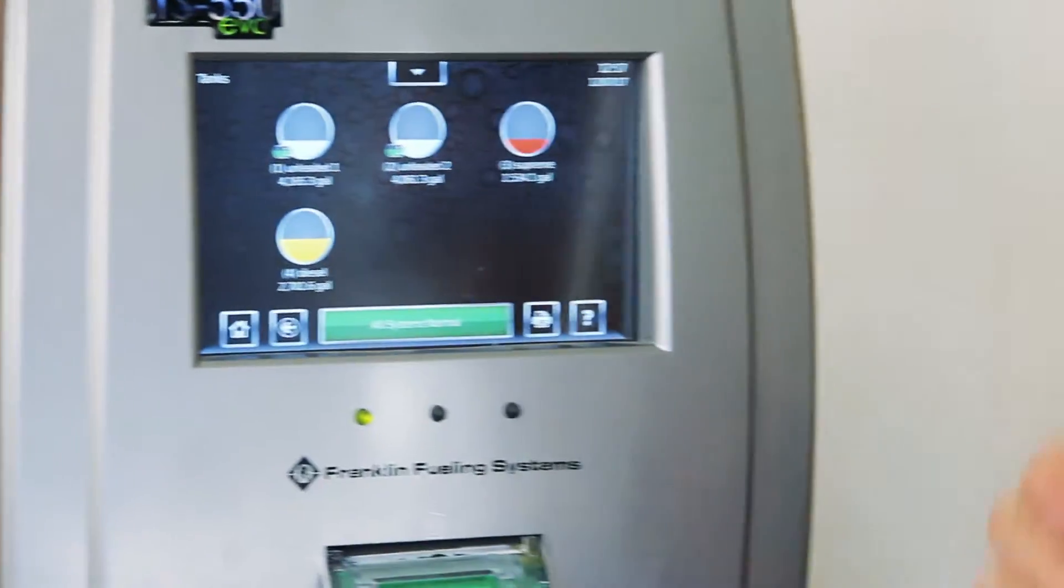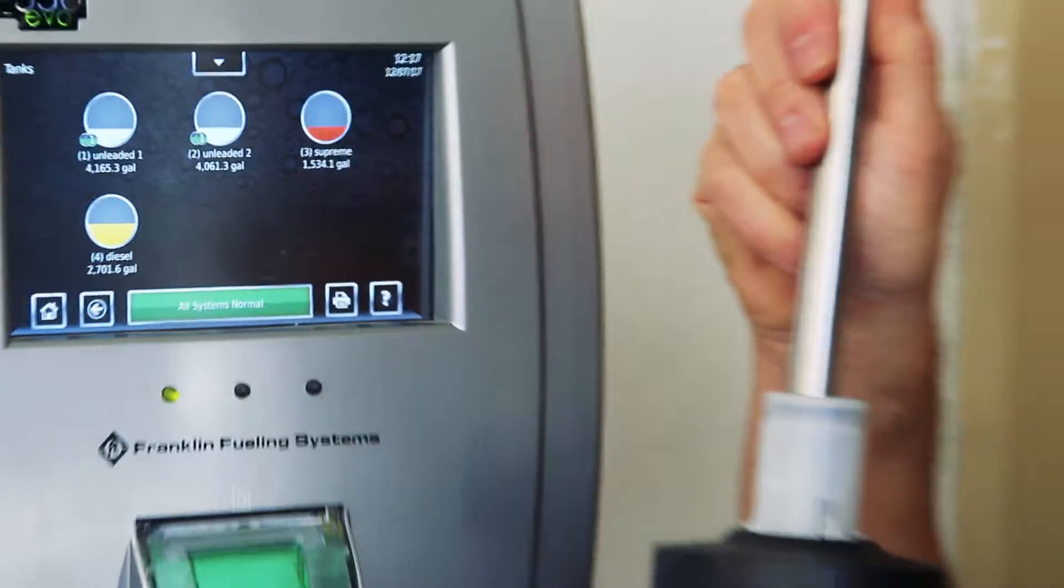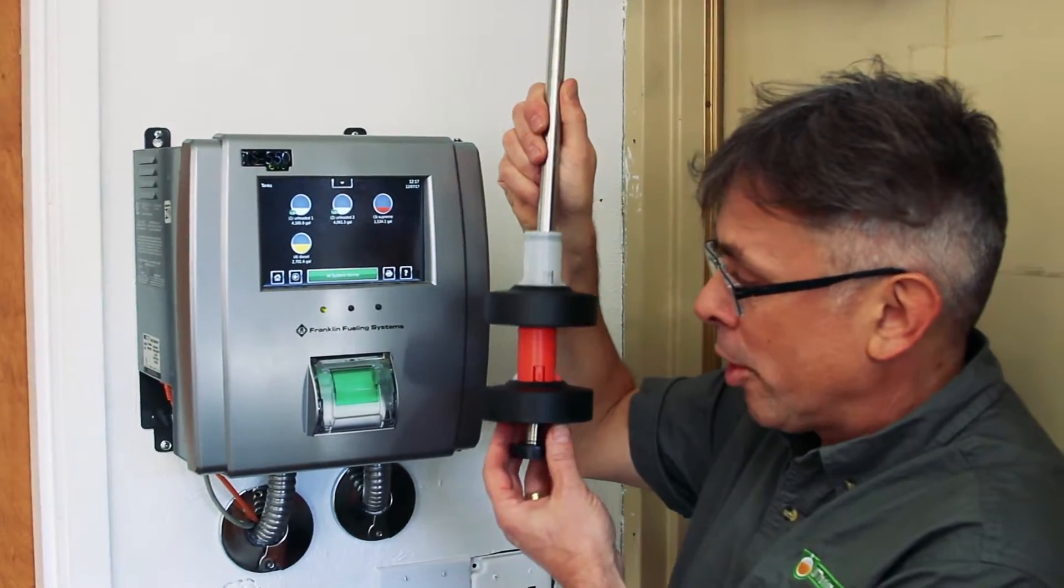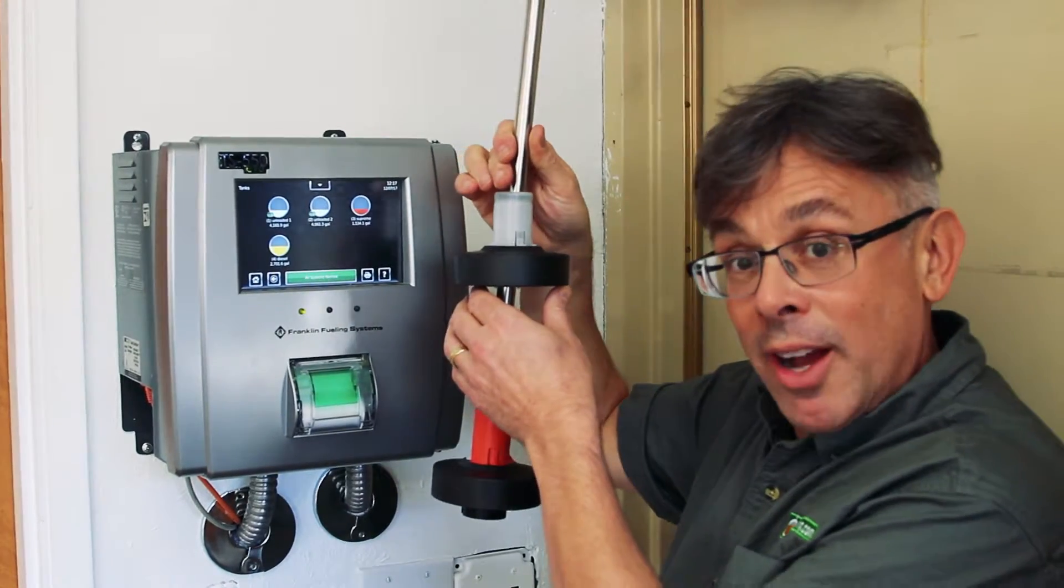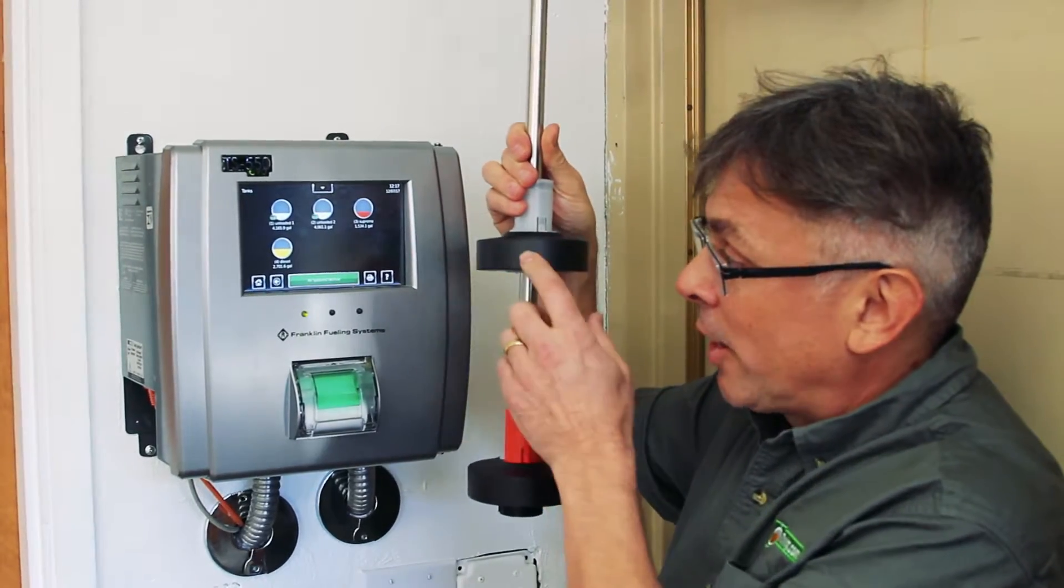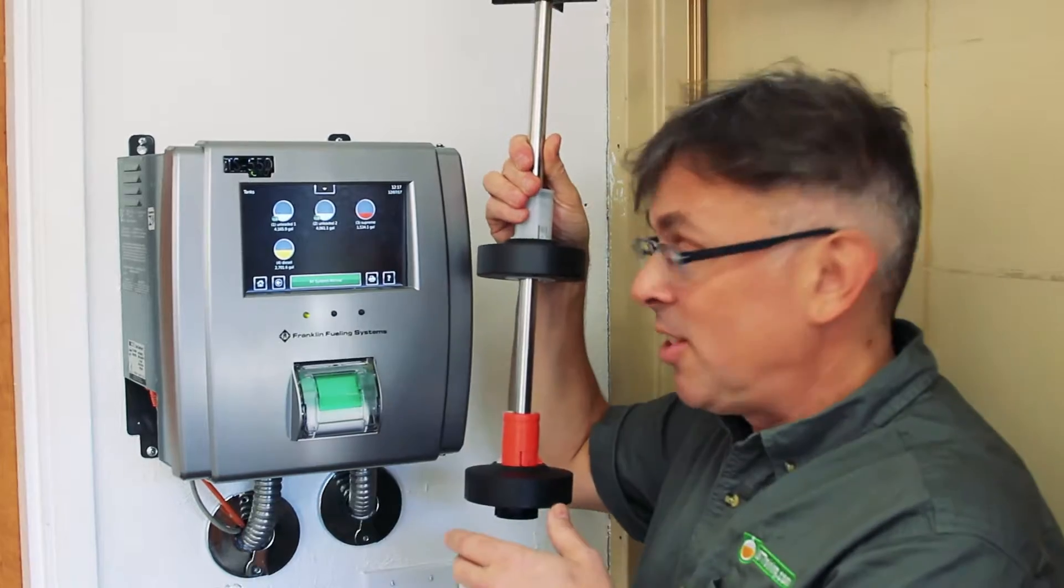There's actually a probe inside an underground storage tank. There's a bottom float for water and another float for fuel. And so as the liquid level rises, say during a delivery, that electronic information is then sent back to the tank gauge.